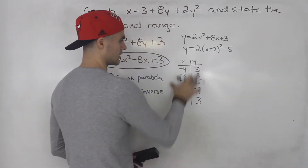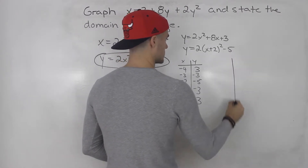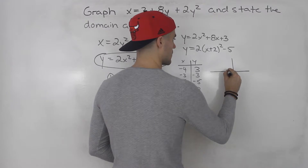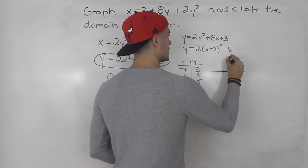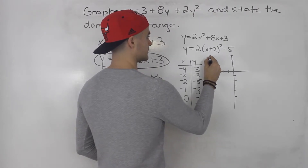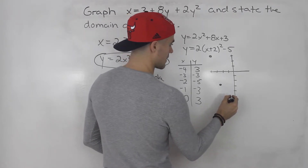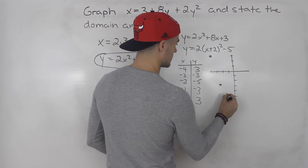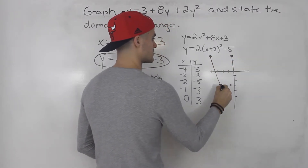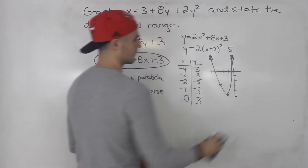Now let's graph this parabola. Setting up the axes, we plot: negative 4 and positive 3 up here; negative 3 and negative 3 down here; negative 2 and negative 5 at the bottom; negative 1 and negative 3 over here; and 0 and 3 up here. Connecting these points, the parabola looks like this.